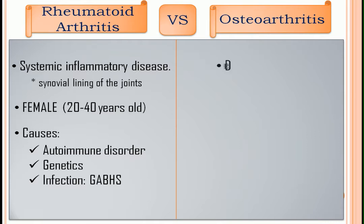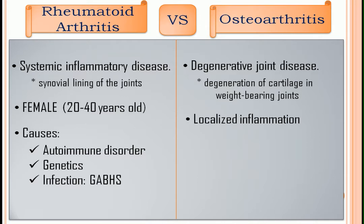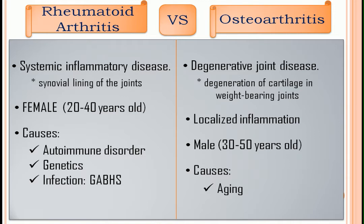Osteoarthritis. It is a degenerative joint disease characterized by the degeneration of cartilage in weight-bearing joints like the spine, hips, and knees. This narrows the joint spaces causing the bone to rub together, which results in pain and limited joint movement. It is also a localized inflammation. It is common to males of 30 to 50 years of age. Causes: aging, since it is a degenerative disease, and lastly, obesity.